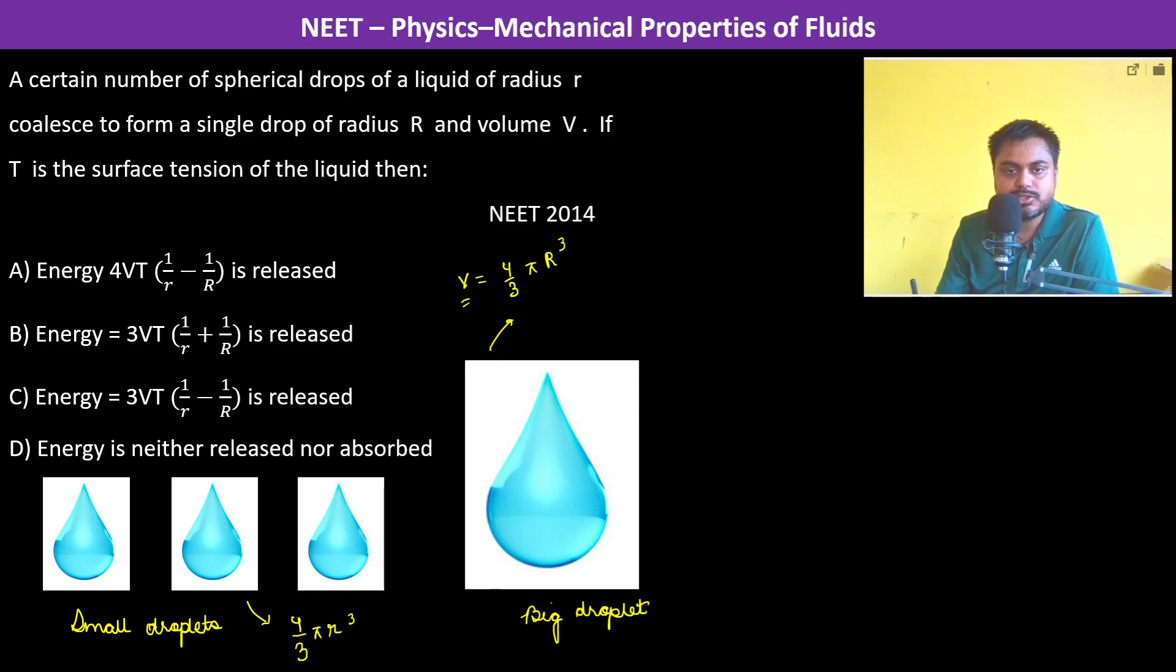Now this V has to be kind of noted down because it's there as a variable. So since the volume is going to remain the same, therefore we can write N into 4 by 3 pi small r whole cube will be equal to 4 by 3 pi R cube.